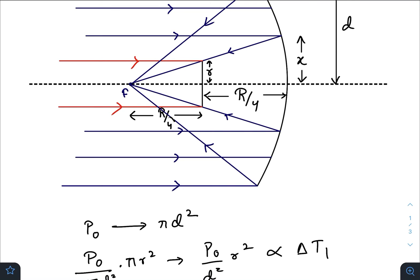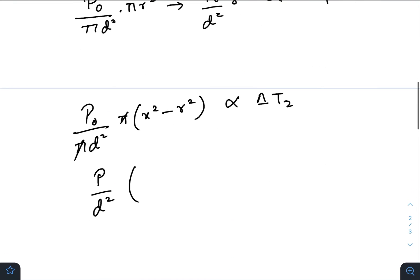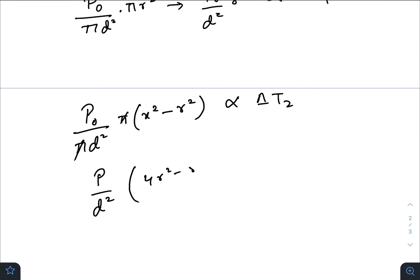So this one should also be r by 4. As you can see, x divided by r by 2 must be equal to small r divided by r by 4. So x is equal to 2r.